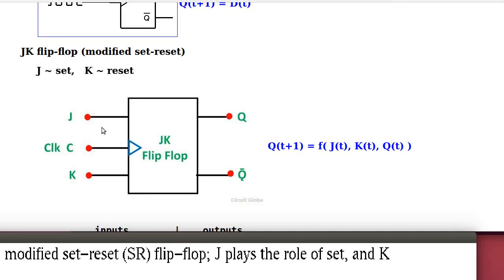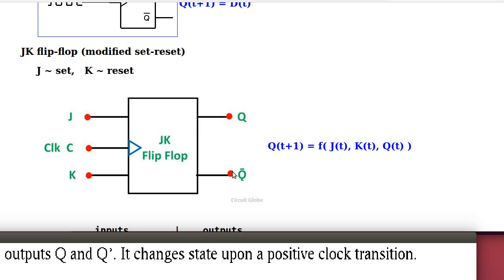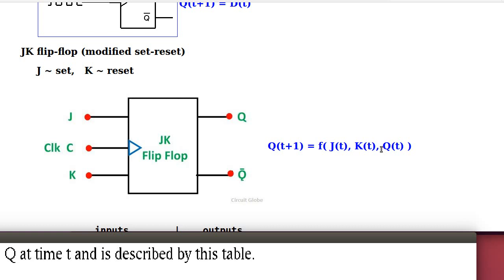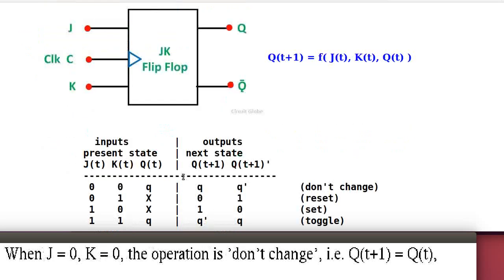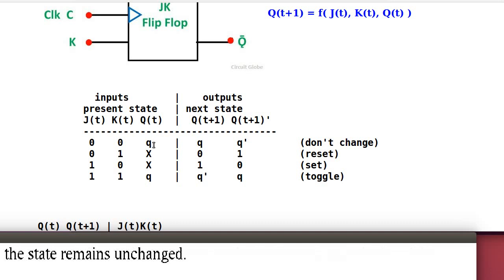Here J plays the role of set and K plays the role of reset. This diagram shows a JK flip-flop with inputs J, K and outputs Q and Q', the complement of Q. It changes state upon a positive clock transition. The next state Q(t+1) is a function of inputs J, K and the current state Q at time t, as described by this table. When J equals 0, K equals 0, the operation is don't change — meaning Q(t+1) equals Q(t), the state remains unchanged.